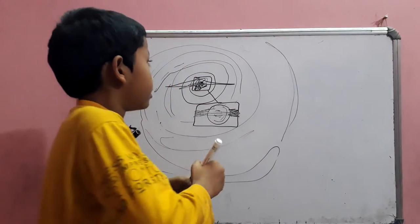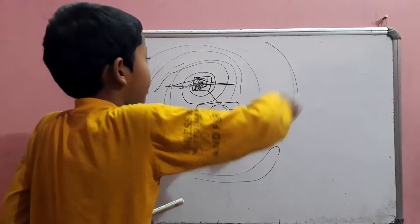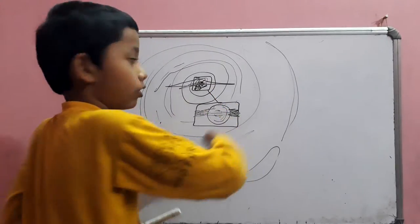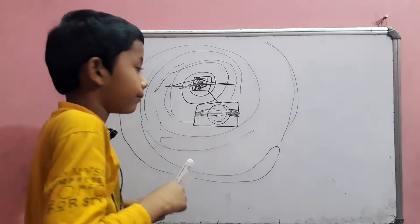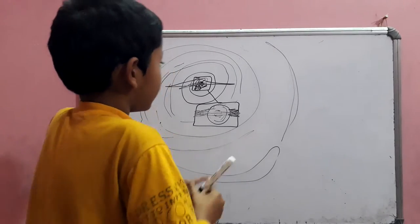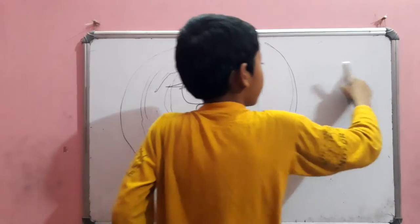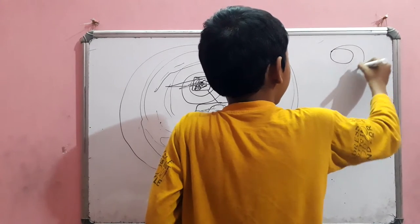And here, it is a spiral thing. Here, this is the galaxy. And you see, this is the Andromeda galaxy.